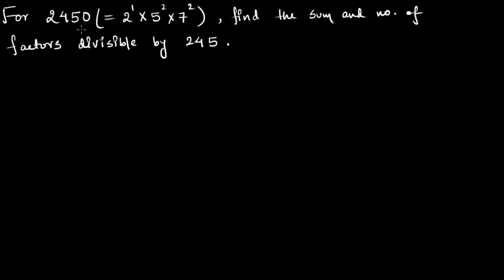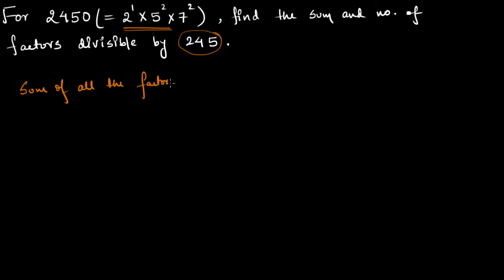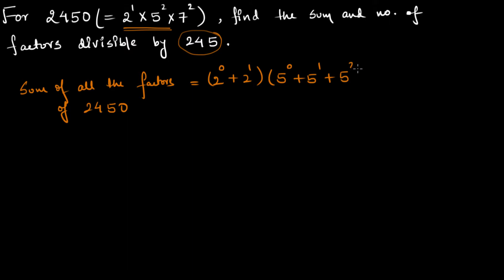For 2450, whose prime factorization is already given, find the sum and number of factors divisible by 245. Before finding that, let us first find the sum of all the factors of 2450. This will be equal to (2^0 + 2^1) multiplied by (5^0 + 5^1 + 5^2) and (7^0 + 7^1 + 7^2). When multiplied together, this expression gives the sum of all the factors of 2450.